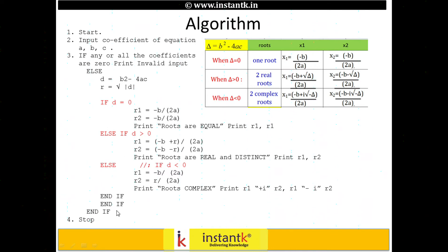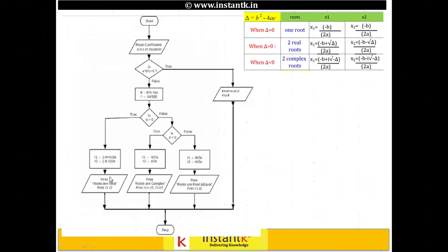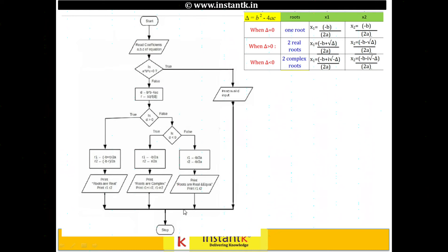So there are two if conditions, each with end if, and a stop. This is the algorithm. This flowchart is very close to the algorithm. What we are doing is reading coefficients A, B, and C. If any of A, B, or C is zero, we terminate and print invalid. Otherwise, we compute D = B times B minus 4AC and R as the square root of D.